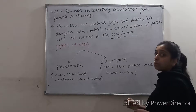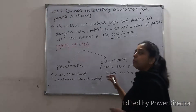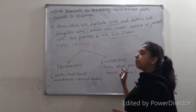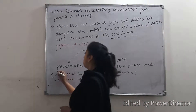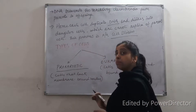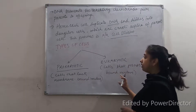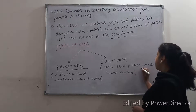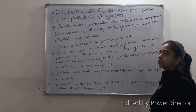Later, we will study the types of cell division, which are mitosis and meiosis. Now, before going into the details, we will study the types of cells. There are basically two types of cells: prokaryotic cells and eukaryotic cells. The prokaryotic cells are a primitive type of cells — they lack the membrane-bound nucleus. The eukaryotic cells are more complex than the prokaryotic cells and they contain a membrane-bound nucleus. This is the major difference between prokaryotic and eukaryotic cells.